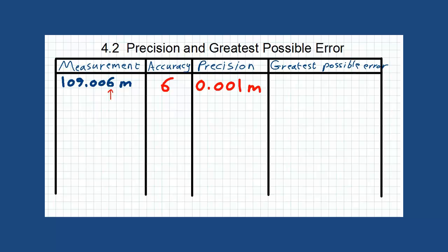Now, divide this precision by 2 and you will have the greatest possible error, which is this number.